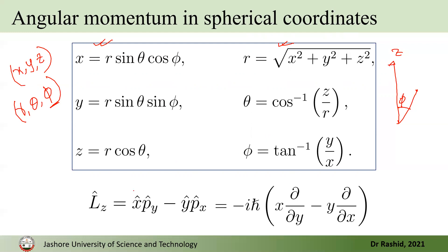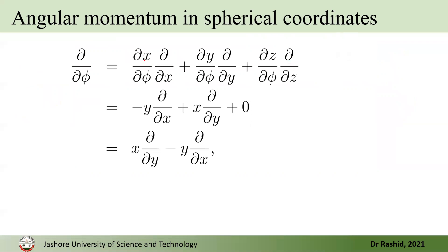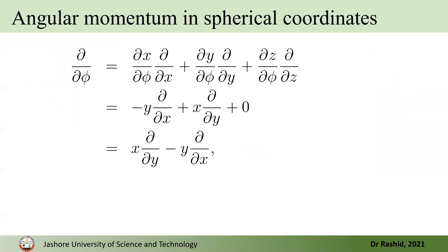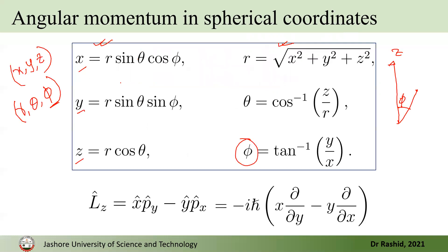We remind ourselves that the z component of the angular momentum operator can be written as x ∂/∂y minus y ∂/∂x using partial derivatives. To express ∂/∂φ we take derivatives of x, y, and z with respect to φ, giving us: dx/dφ times ∂/∂x, plus dy/dφ times ∂/∂y, plus dz/dφ times ∂/∂z.